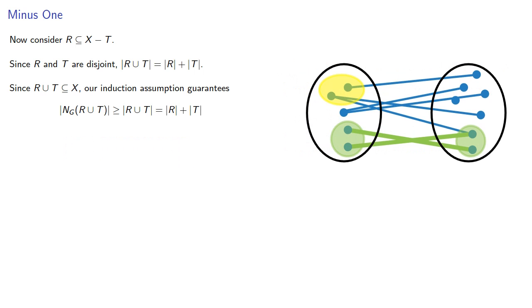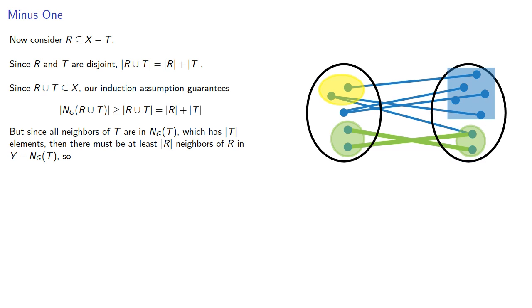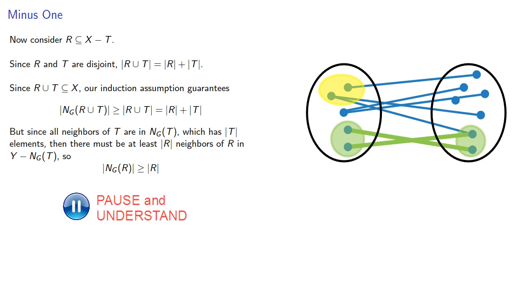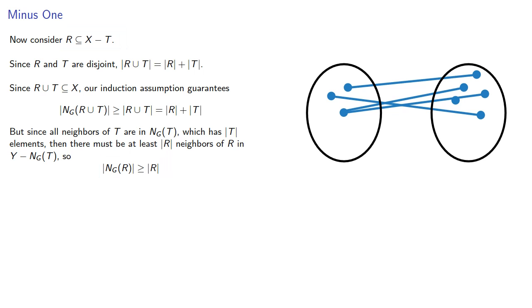Since all neighbors of t are in the neighborhood of t, which has cardinality t elements, there must be at least cardinality r neighbors of r in y minus the neighborhood of t. To see this clearly: we have to fit r plus t neighbors someplace — at most t of them can go in the neighborhood of t, so at least r of them have to go elsewhere. And so the neighborhood of r has to be at least as large as r itself. This means x minus t and y minus the neighborhood of t also meet the requirements of our induction hypothesis, and so there is a matching between those two sets.